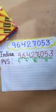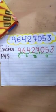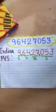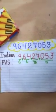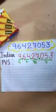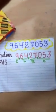Let's say we have a number: 9, 6, 4, 2, 7, 0, 5, 3. We have to write its number name according to both the Indian and International Place Value Systems. When writing it in the Indian system, we should keep in mind that commas are placed first after three digits from the right, then after every two digits thereafter.